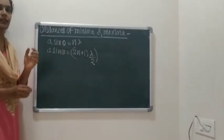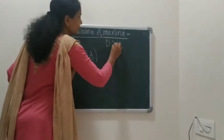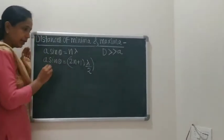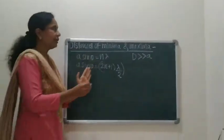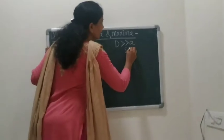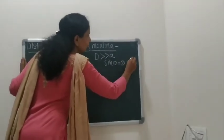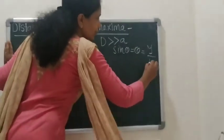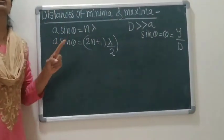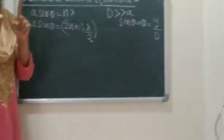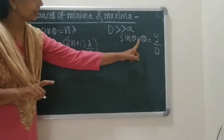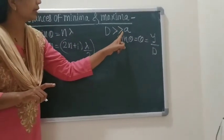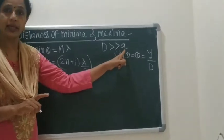In the practical case, the distance capital D is very much greater than a. Therefore we can say that sin θ is nearly equal to θ, which equals y upon capital D. For single slit diffraction, from the ray diagram, sin θ = θ = y/D because D is very much greater than a.